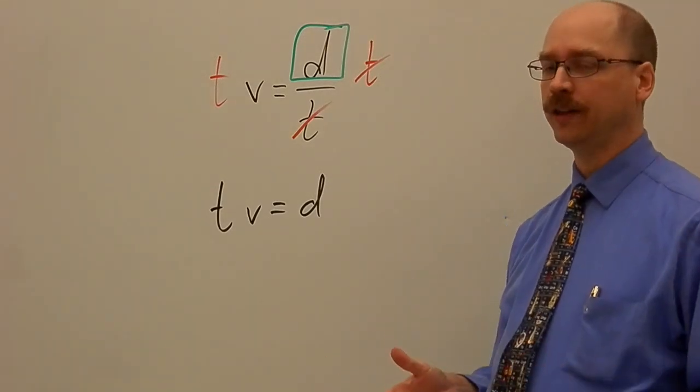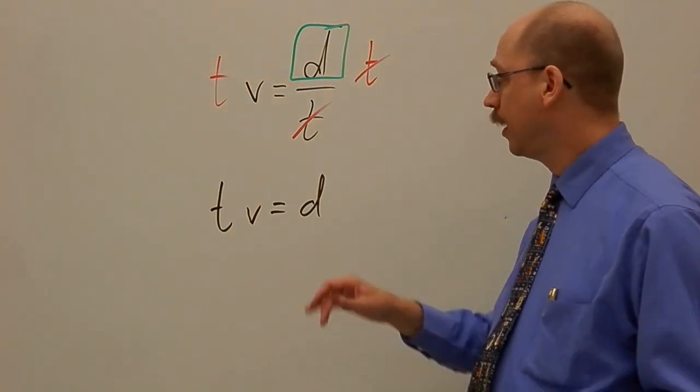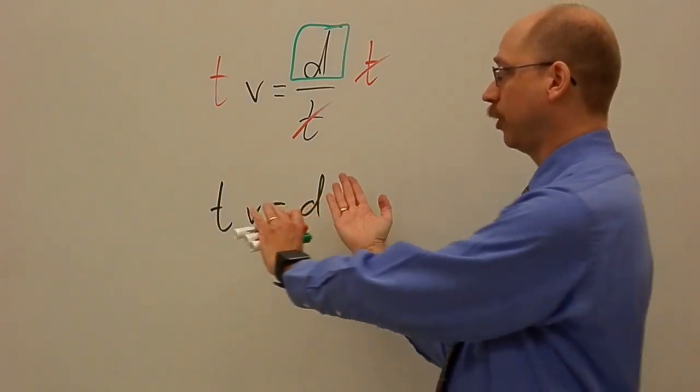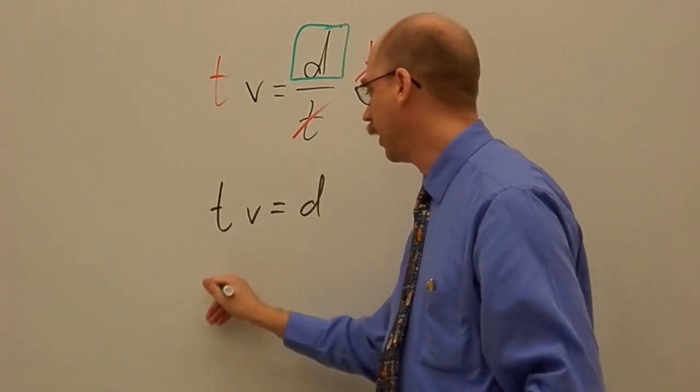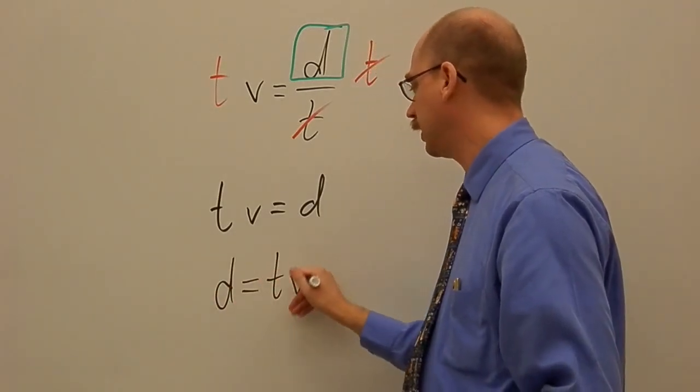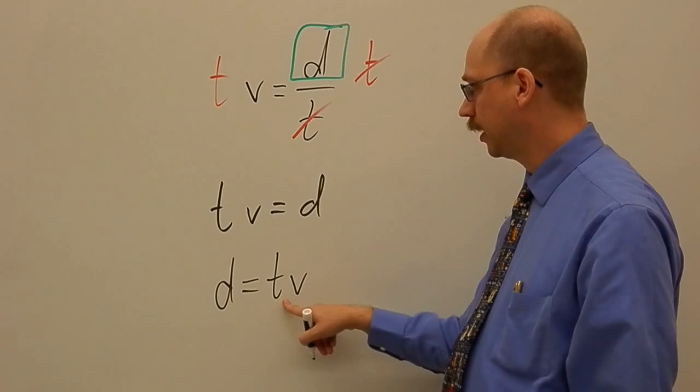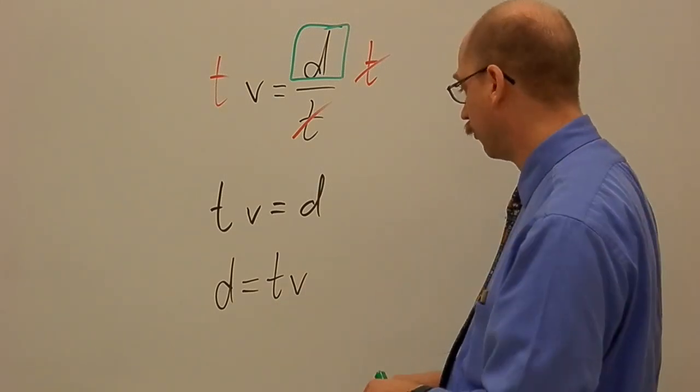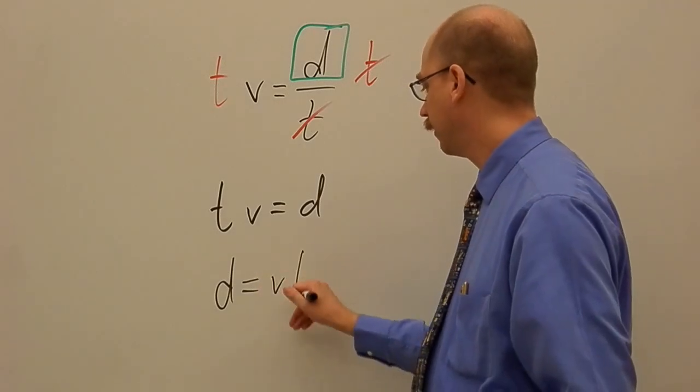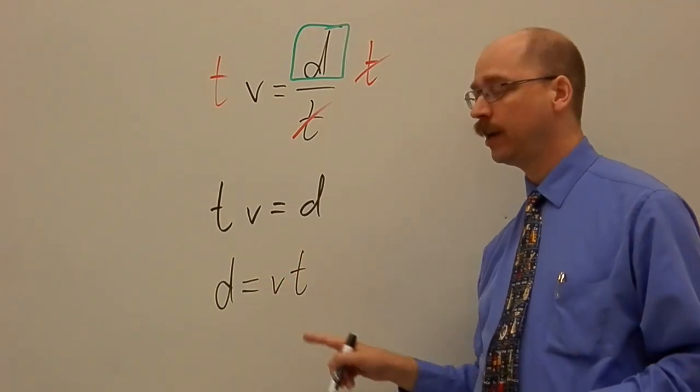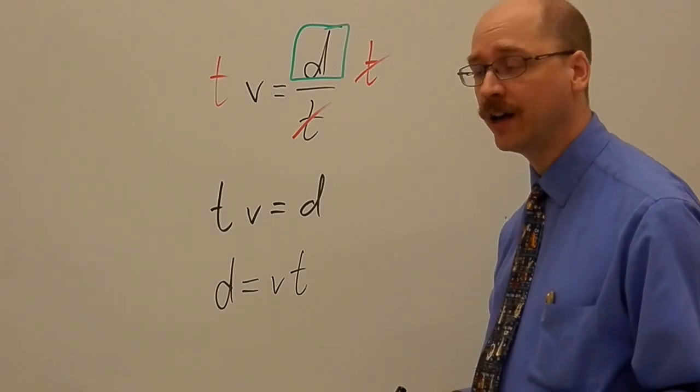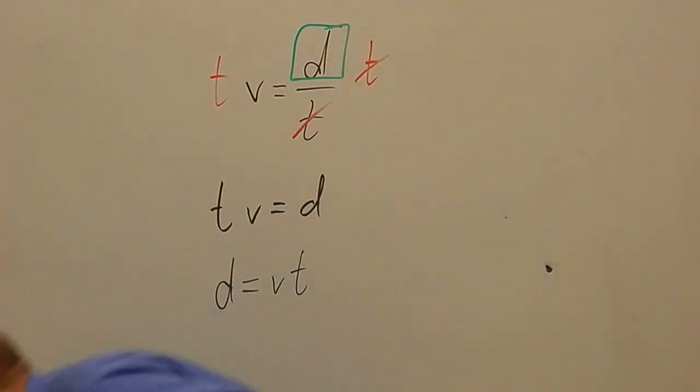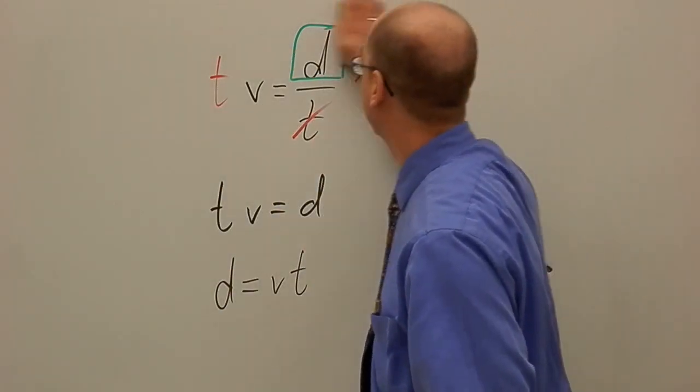As a general rule, and this is just the way that we do things in physics similar to math, we don't leave our unknown variable on the right-hand side. So that means usually what I'll do is I'll just flip this whole thing around now and I'll write it as D equals TV. So displacement equals time multiplied by velocity. Or if this is just the way that you wrote it out, if instead you've got VT, it's the same thing because when we're multiplying these two variables on the right-hand side, it doesn't matter what order we're multiplying them in.